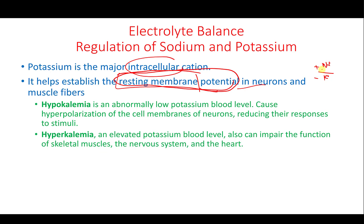Maintaining the ratio of sodium and potassium is a very well-balanced process. We need to maintain this ratio so that inside is always negative and outside is always positive. Any changes in their concentrations cause changes in membrane potential values. For example, higher sodium outside means higher positivity outside, so the difference between inside and outside gets bigger — moving from minus 70 to maybe minus 90.